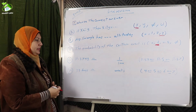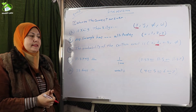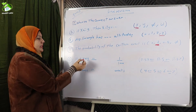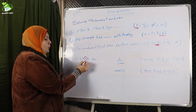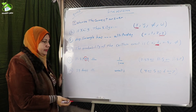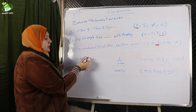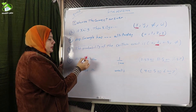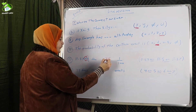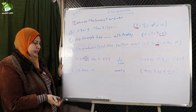Number thirteen: 11.5749 rounded to the nearest thousandth. The thousandths digit is four. The digit to its right in the ten-thousandths place is nine. Since nine is a large number, it will increase four to become five. So the answer will be 11.575.